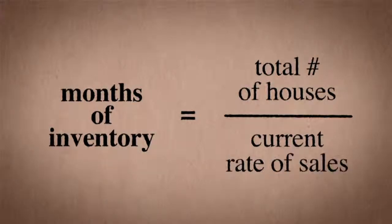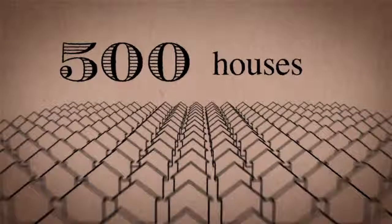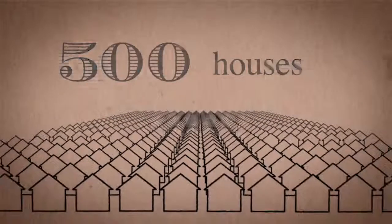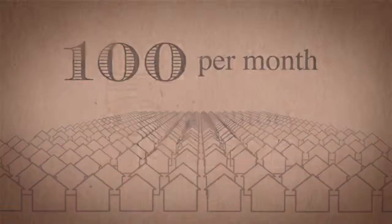For example, if there are 500 houses on the market and houses are selling at a rate of 100 per month, then there are five months of inventory.